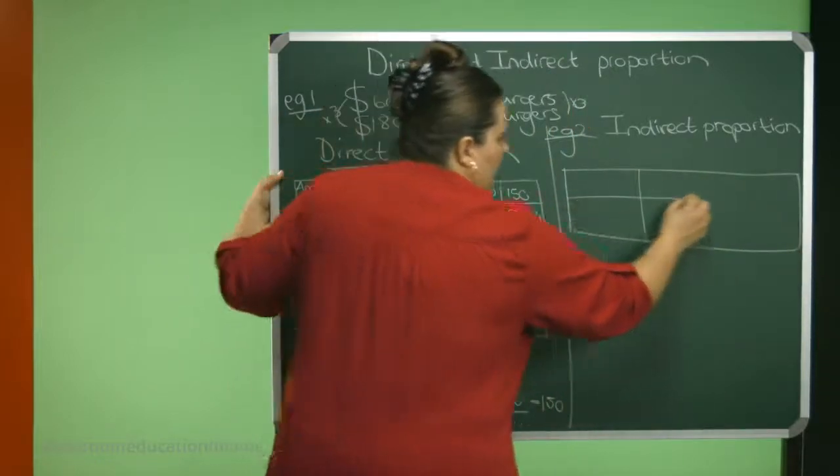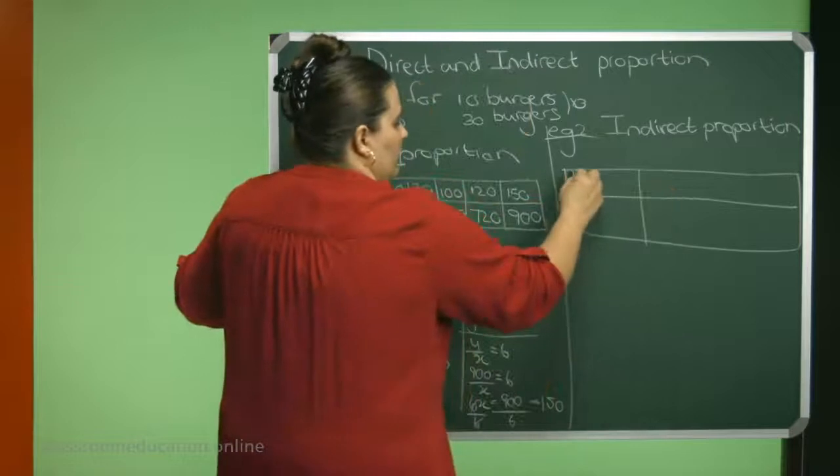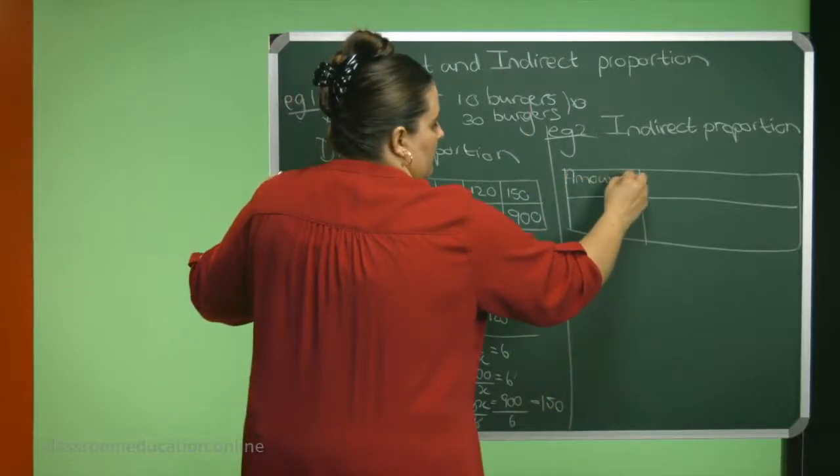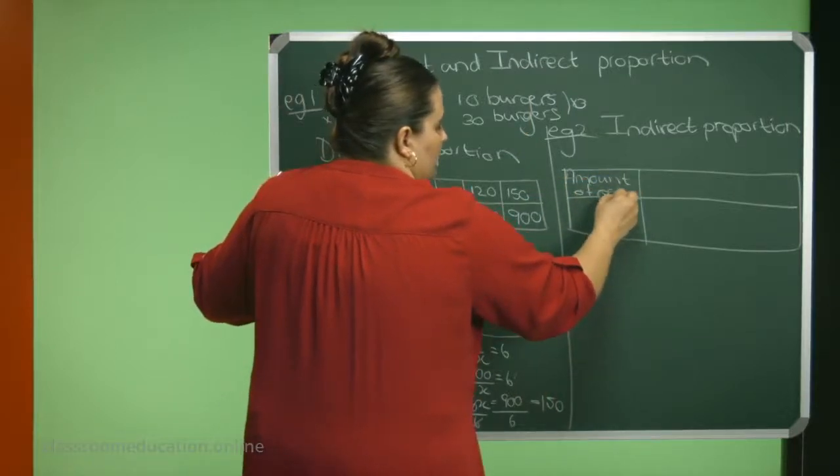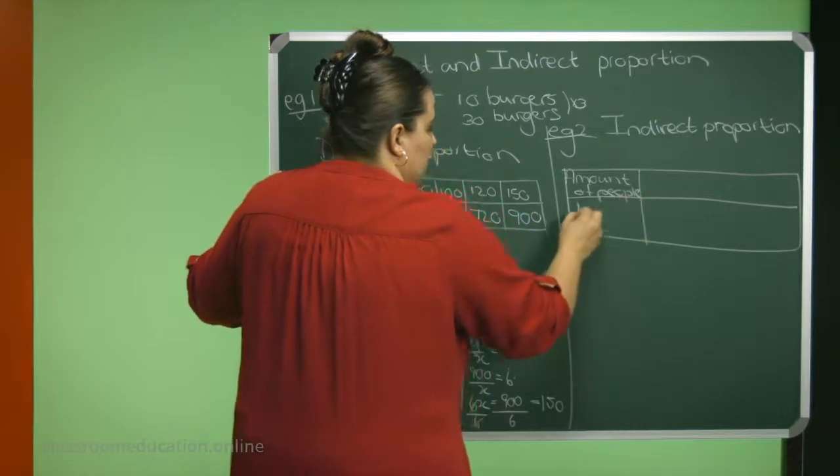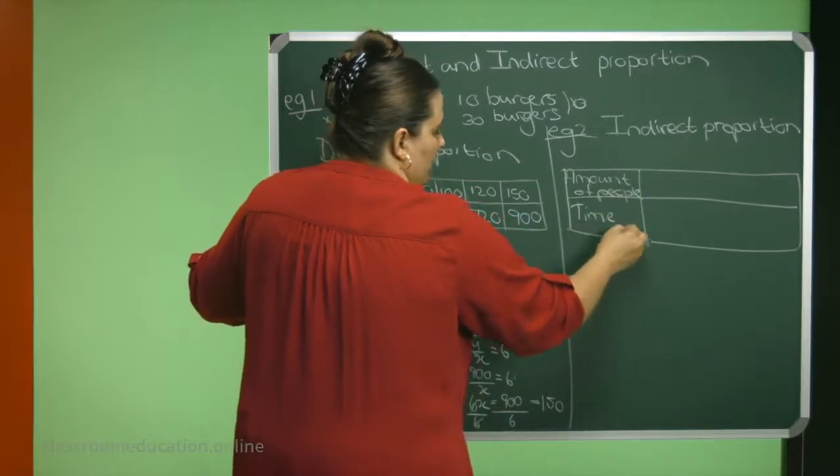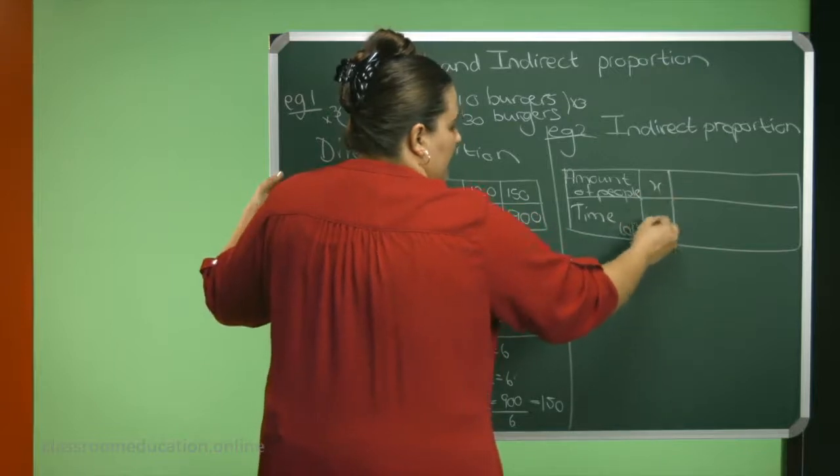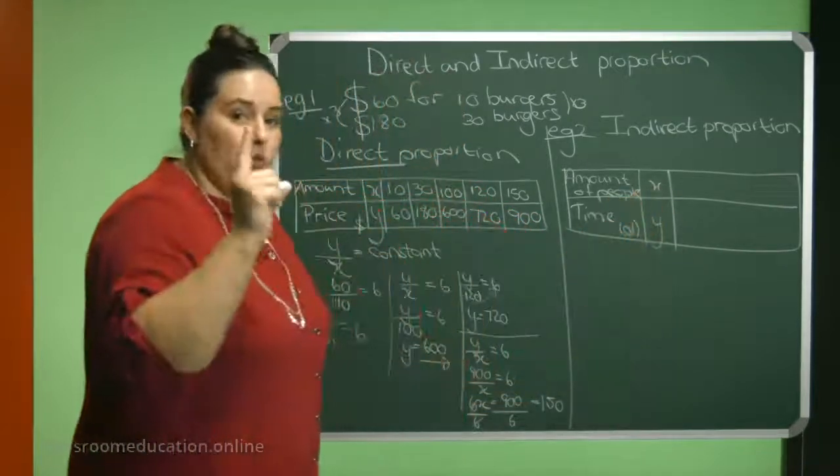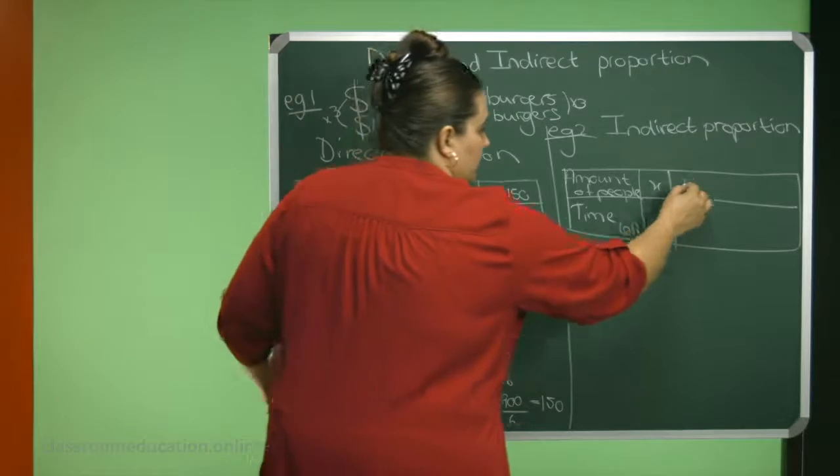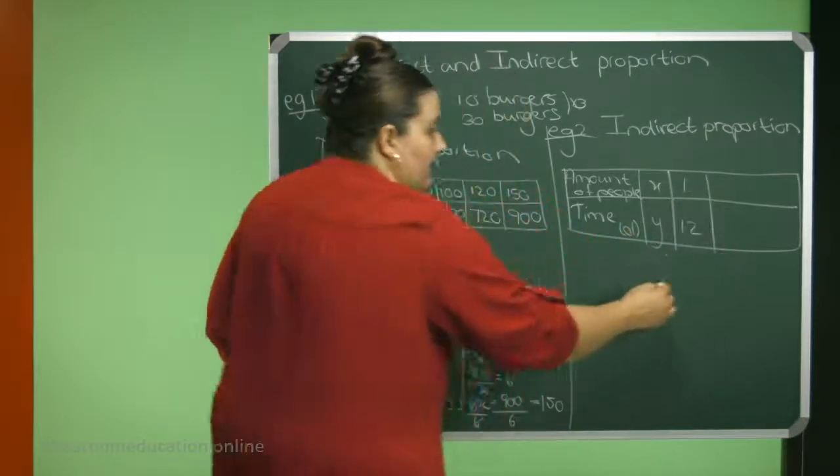We have our amount of people, and we have the days, the time, duration, the days. That's the X and the Y. So for you as one person, it will take you 12 days to paint the house.